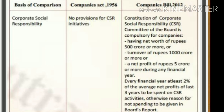Another major difference is Corporate Social Responsibility (CSR). In the Companies Act 1956, there was no provision for CSR. Under the Companies Act 2013, the constitution of a CSR committee of the board is compulsory for companies with a net worth of 500 crore or more, or a turnover with a profit of 5 crore or more during the financial year. Every financial year, at least 2% of the average net profit of the last three years must be spent on CSR activities. If the company has not spent this amount, it must give a reason in the board report.